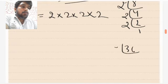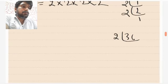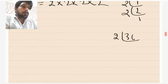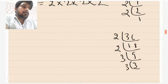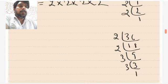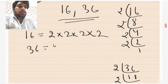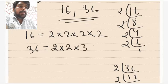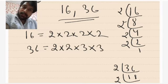Now let me find out the prime factorization of 36. By 2 it goes 18 times, then by 2 it goes 9 times, then by 3 it goes 3 times, and then by 3 it goes 1 time. So 36 can be written as 2 × 2 × 3 × 3. These are your prime factors.